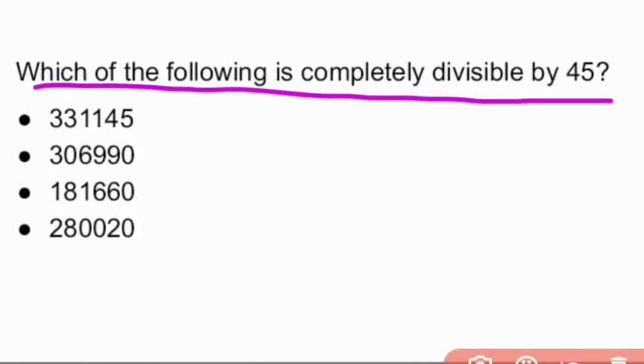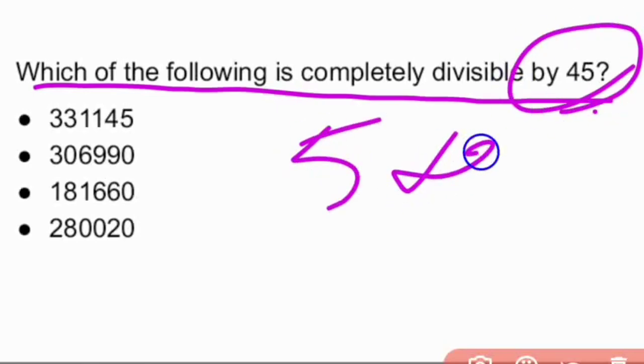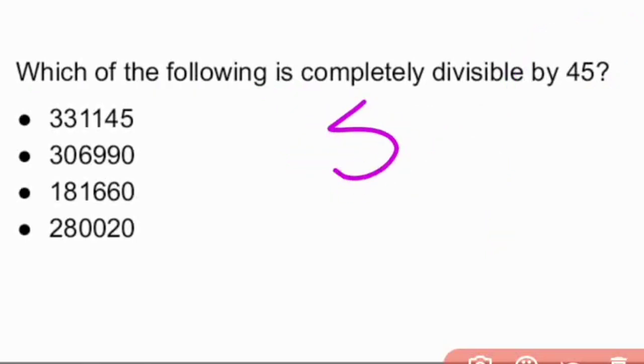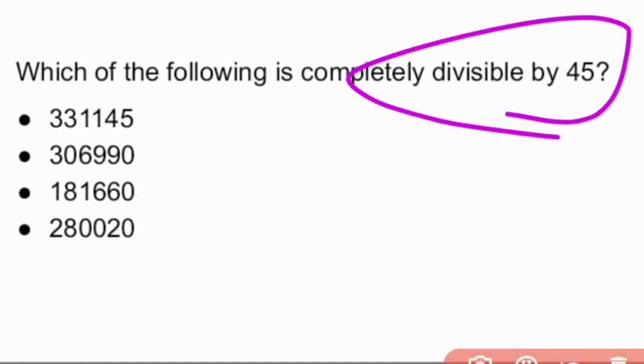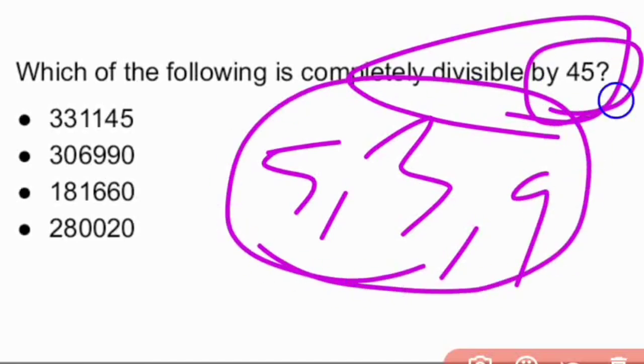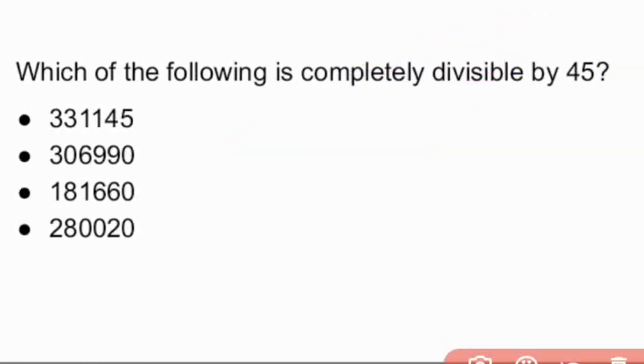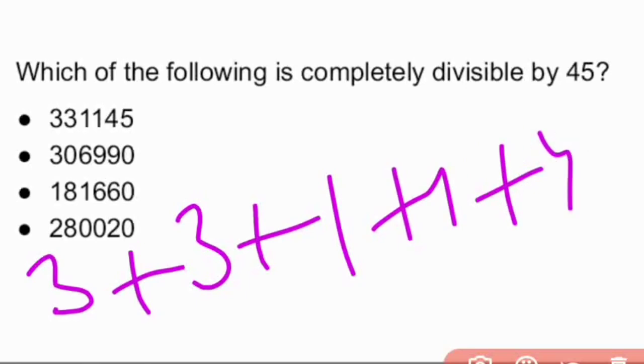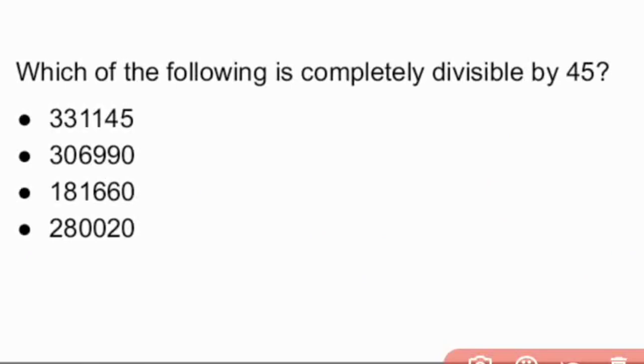Which of the following is completely divisible by 45? 45 means 5 × 9. So if divisible by both 5 and 9, it's automatically divisible by 45. 5, 3, and 9. If divisible by these 3 numbers, automatically it is also divisible by 45. First number, same as usual, first add: 3 + 3 + 1 + 1 + 4 + 5 = 6, 7, 8, 8 + 9 = 17. 17 is not divisible by 9, so first number is out.